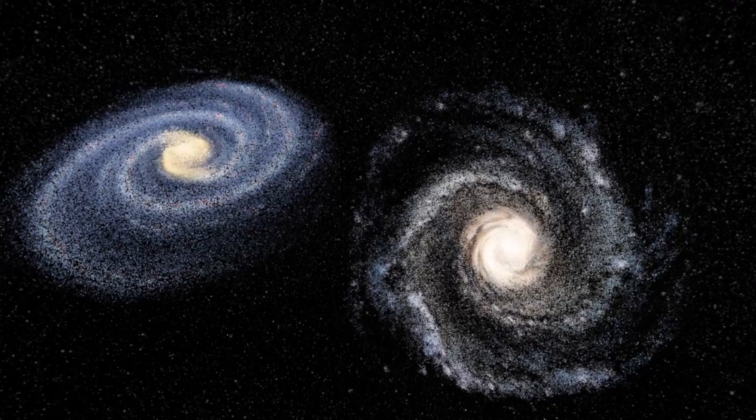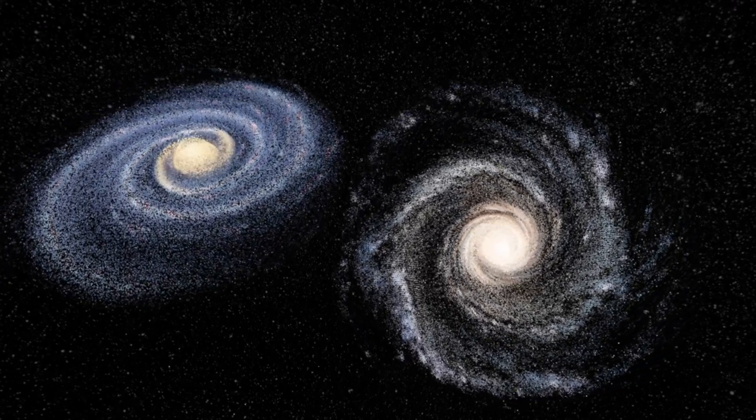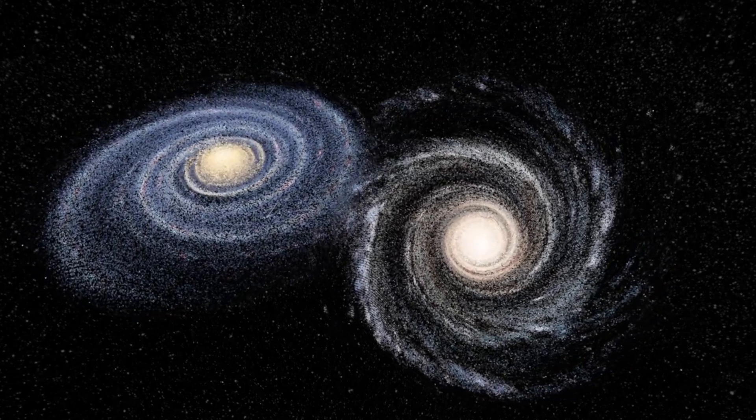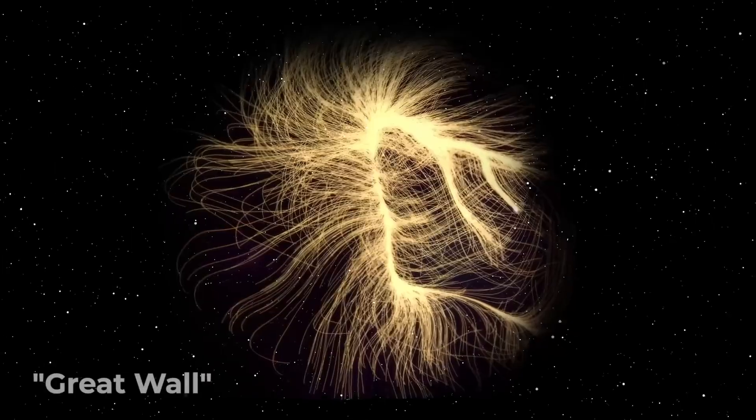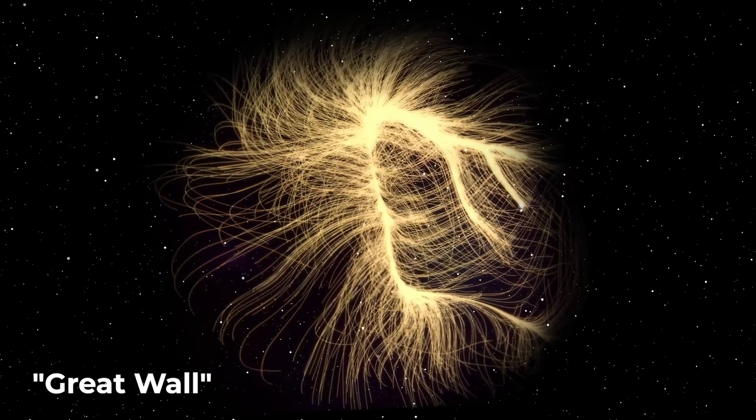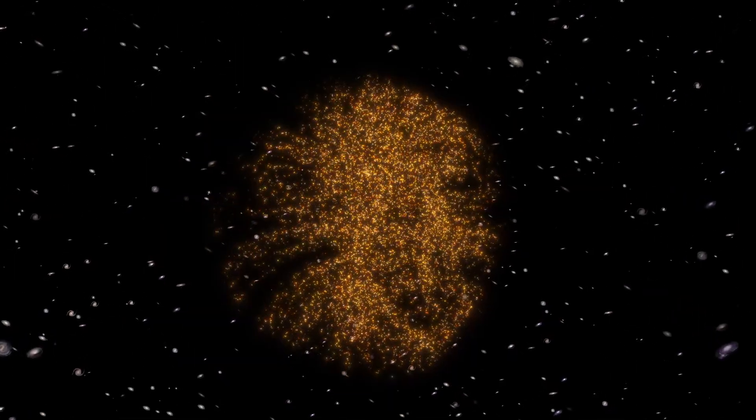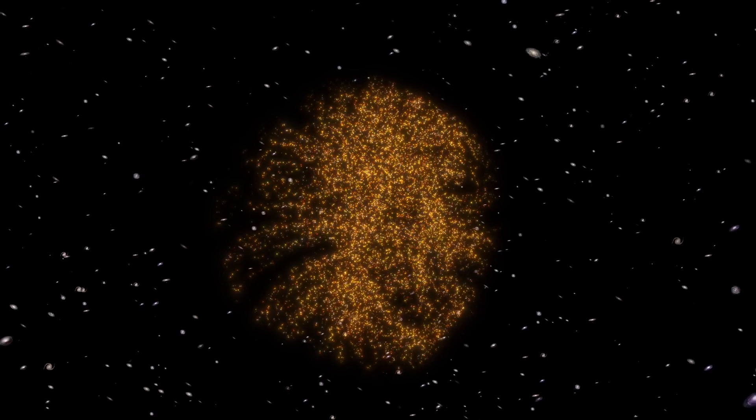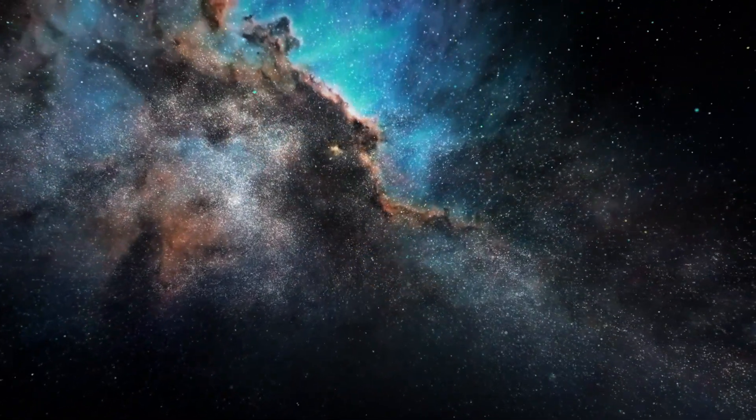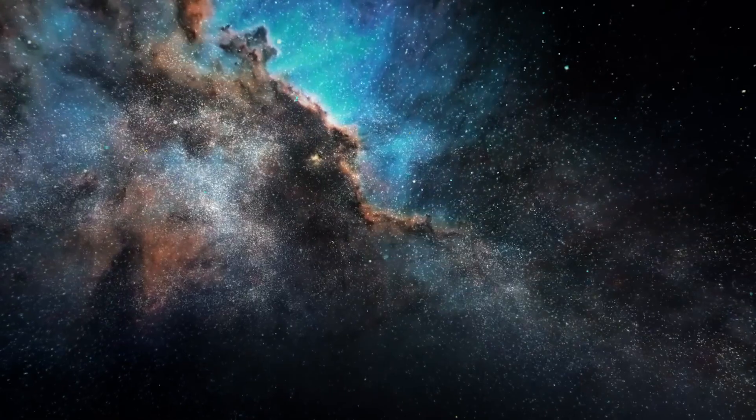For example, the Milky Way, Andromeda, and a number of other galaxies are moving towards the Great Attractor at a speed of about 600 kilometers per second. The Great Attractor is also associated with the so-called Great Wall, an extensive structure of galaxies stretching for hundreds of millions of light-years. This structure is one of the largest known in our universe and consists of numerous clusters and intergalactic gas.